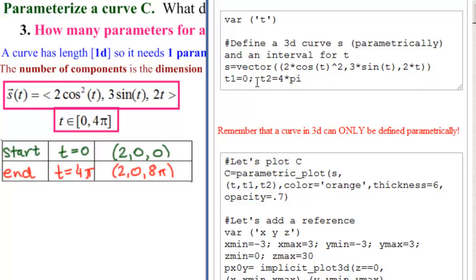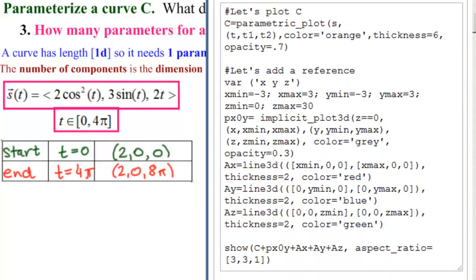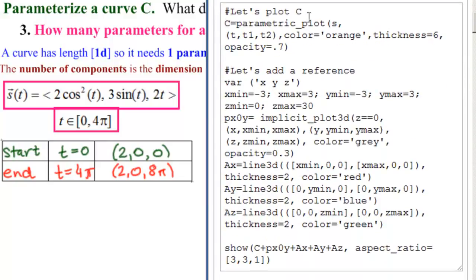t1 equals zero, semicolon, t2 equals four times π, so there's our interval. And let's scroll down here. We're going to graph this function. And so let's plot C, that's a comment. C equals parametric plot, there's our function s. There's our parameter and our interval.